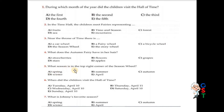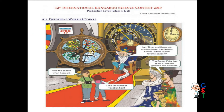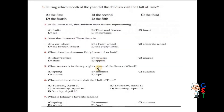Question number five: What season is in the top right corner of the seasonal wheel? Looking at the right side and top right corner, we see September, October, and November — this is autumn. Looking at spring, summer, autumn, winter — autumn is in the top right corner. C is correct. Question number six: When did the children visit the Hall of Time? The calendar shows Wednesday, April 10. C is correct — Wednesday, April 10.